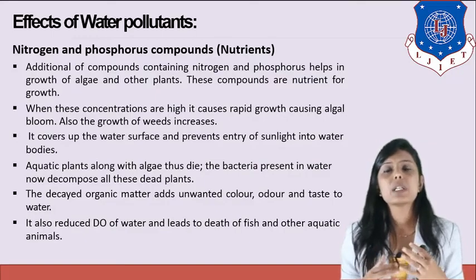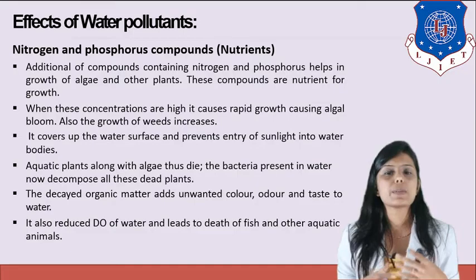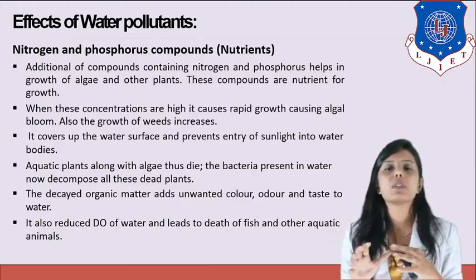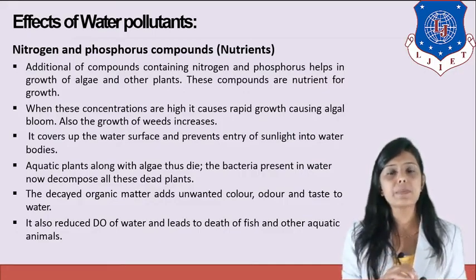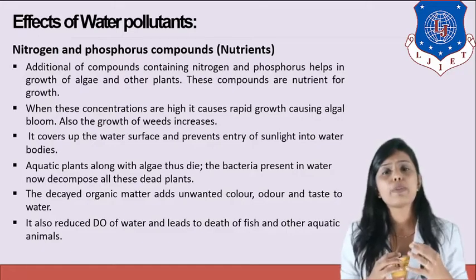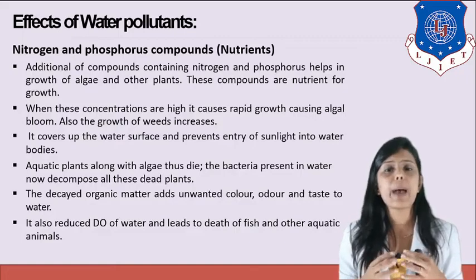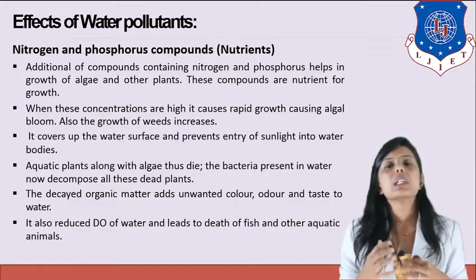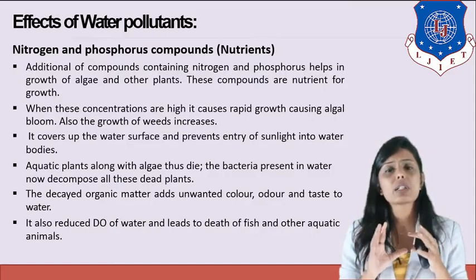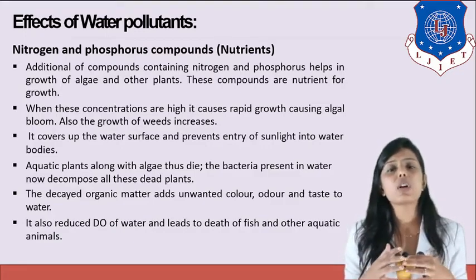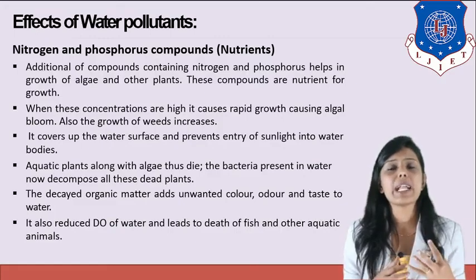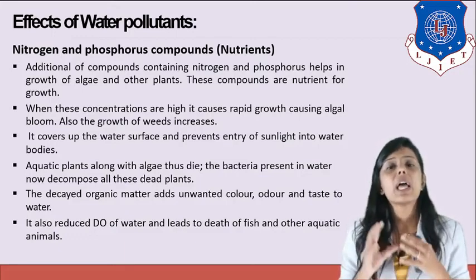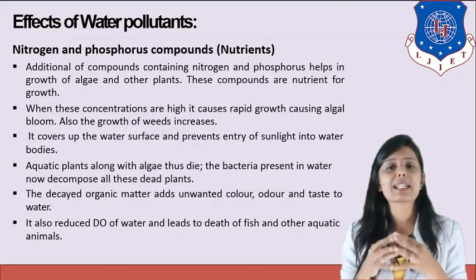When excessive nitrogen and phosphorus are present in water, it results in an increase of algae. The algae covers the water surface, blocking sunlight from reaching aquatic plants. Without sunlight, aquatic plants cannot perform photosynthesis properly and die. Bacteria then decompose the dead organisms using dissolved oxygen, reducing its concentration and causing the death of more aquatic plants and animals. This is how nitrogen and phosphorus compounds are harmful.